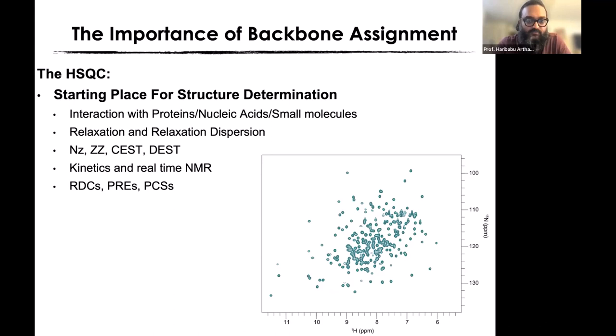Pretty much all NMR investigations start with this very simple spectrum. Whether you're looking at proteins interacting with each other, a protein interacting with a small molecule, relaxation experiments, relaxation dispersion, CEST, kinetics, or if you want to measure RDCs — most of them start with this very simple spectrum. To record it, if you have a 100 micromolar sample, it will take anywhere from about 20 to 30 minutes.